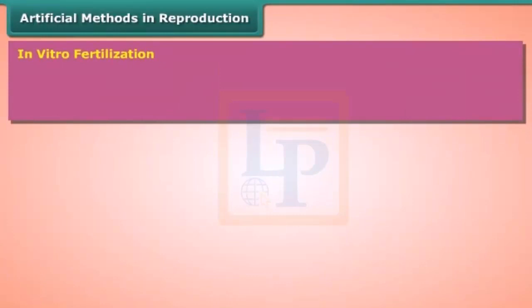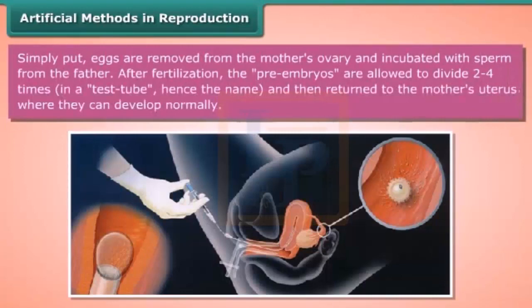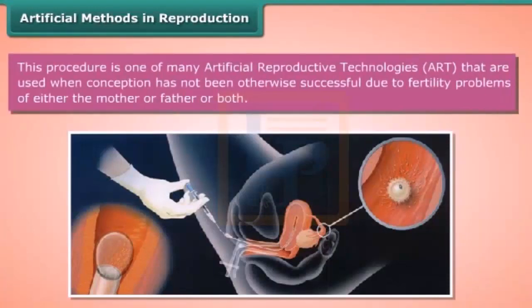In vitro fertilization: a test tube baby refers to a child conceived outside the woman's body. Eggs are removed from the mother's ovary and incubated with sperm from the father. After fertilization, the pre-embryos are allowed to divide two to four times in a test tube, then returned to the mother's uterus where they develop normally. This procedure is one of many artificial reproductive technologies (ART) used when conception has not been otherwise successful due to fertility problems in the mother, father, or both.